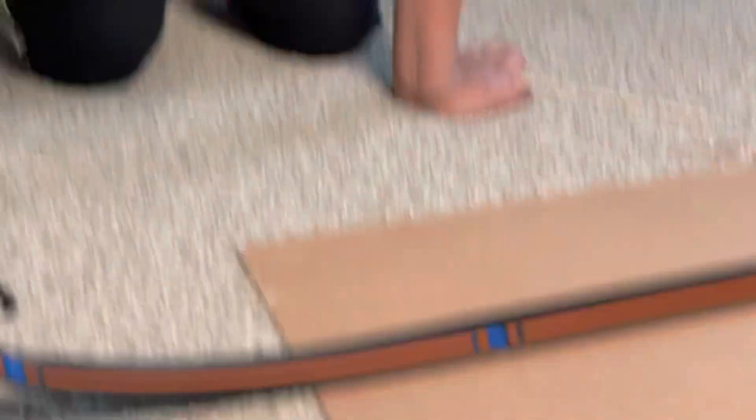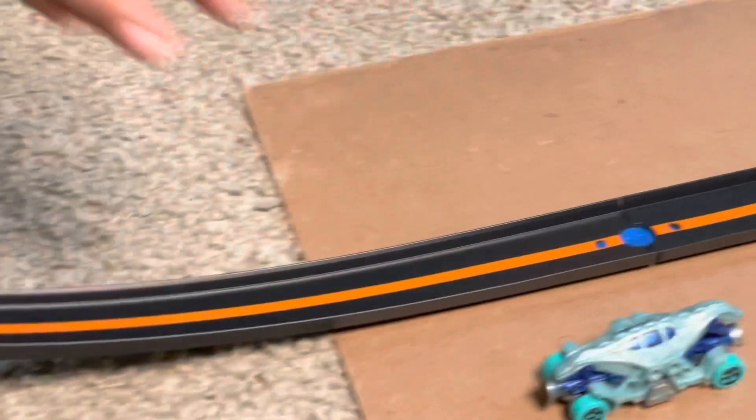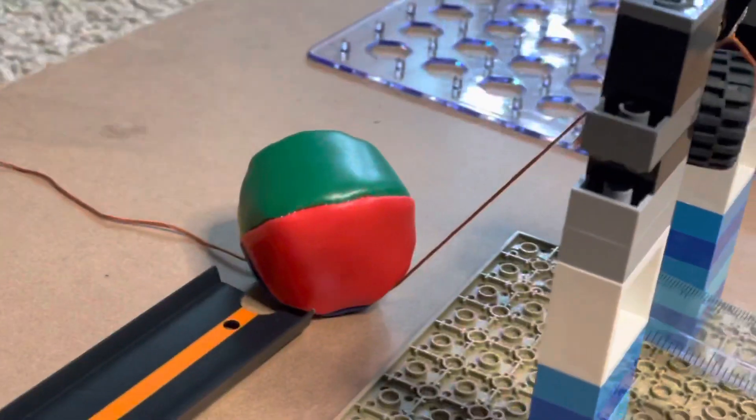So first, this is my wheel and axle simple machine, my car. I put it down my lane which is an inclined plane and then the car travels down and it moves this ball out of the way.